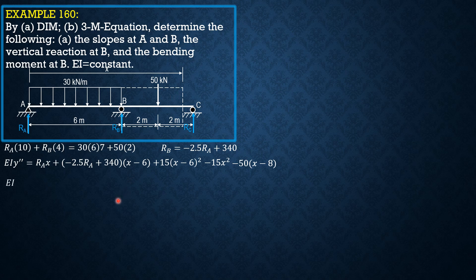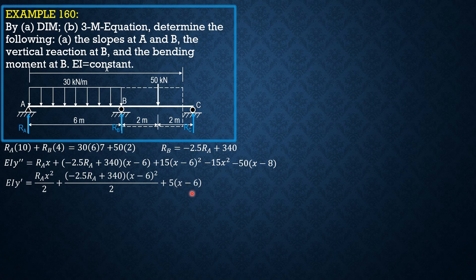Integrating once: EI y prime equals RA X squared over 2, plus (negative 2.5 RA + 340) times (X minus 6) squared over 2, plus 5 (X minus 6) cubed, minus 5 X cubed, minus 25 (X minus 8) squared, plus C sub 1. There is C sub 1 because when X is 0 there is a slope at A.